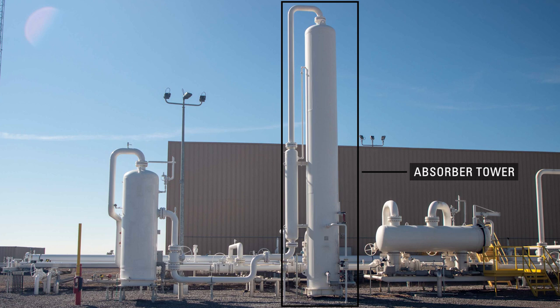One of the most important pieces of equipment in natural gas dehydration is the absorber tower. An absorber tower is where triethylene glycol absorbs the water entrained in natural gas and carries it out of the absorber. Inside the tower, manufacturers install one of three different types of internal designs.